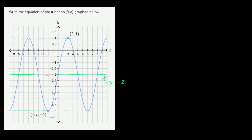But now also, let's think about its amplitude. Its amplitude, that's how far it might get away from the midline. We see here, it went 3 above the midline, going from negative 2 to 1. It went 3 above the midline at the maximum point. And it can also go 3 below the midline at the minimum point. So this thing clearly has an amplitude of 3. So amplitude of 3.